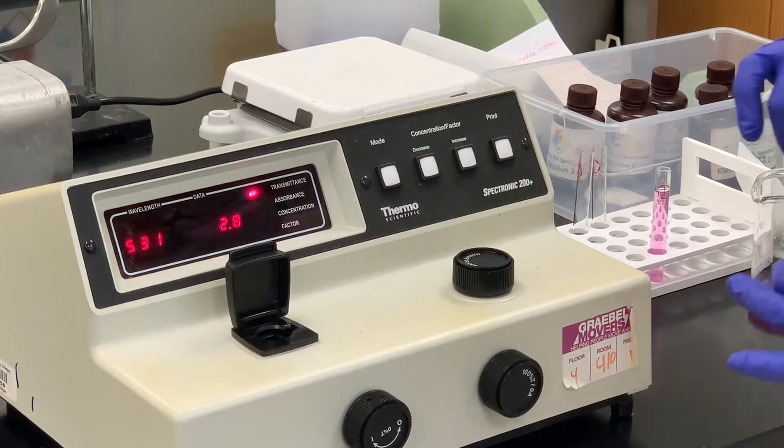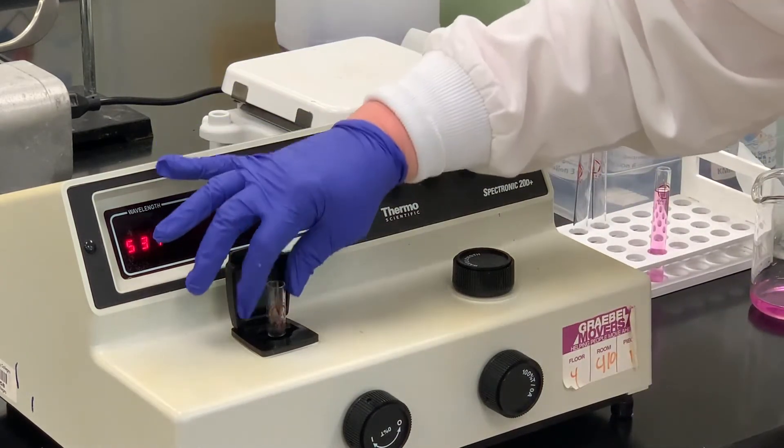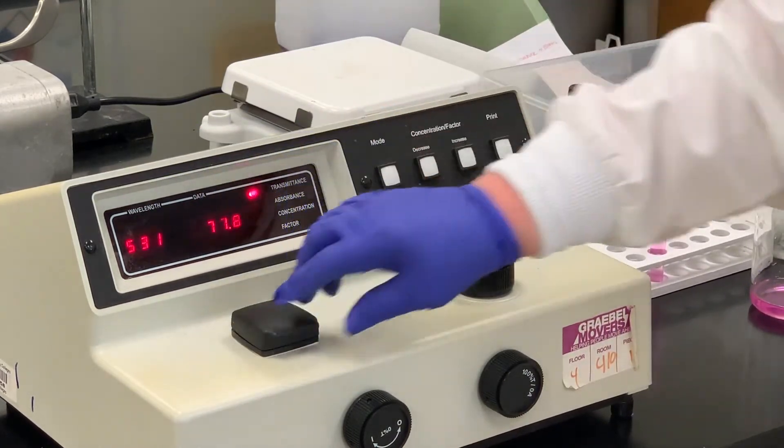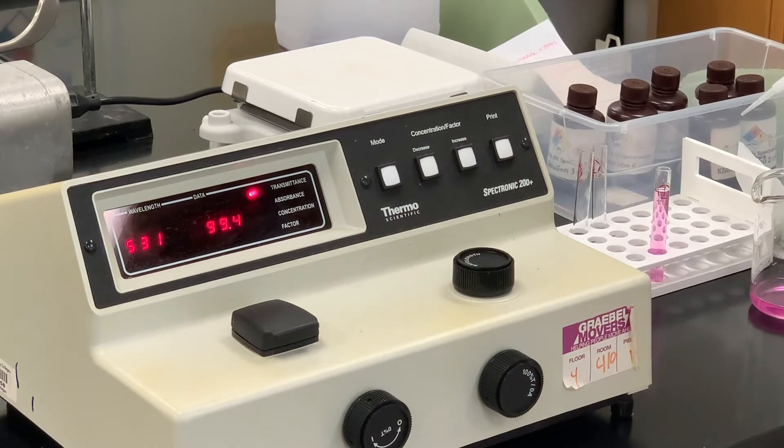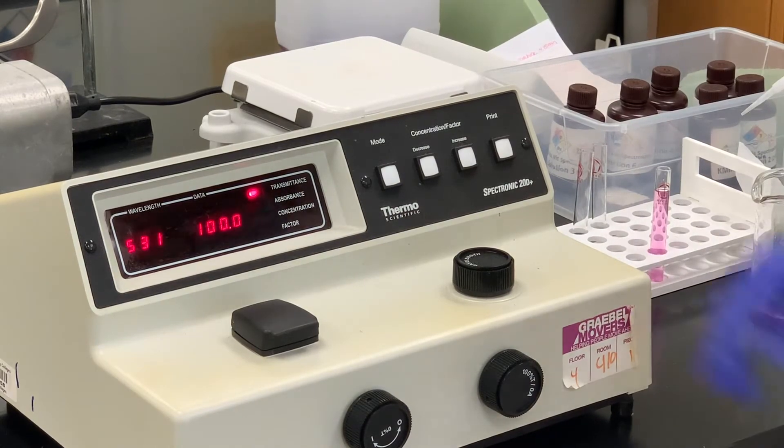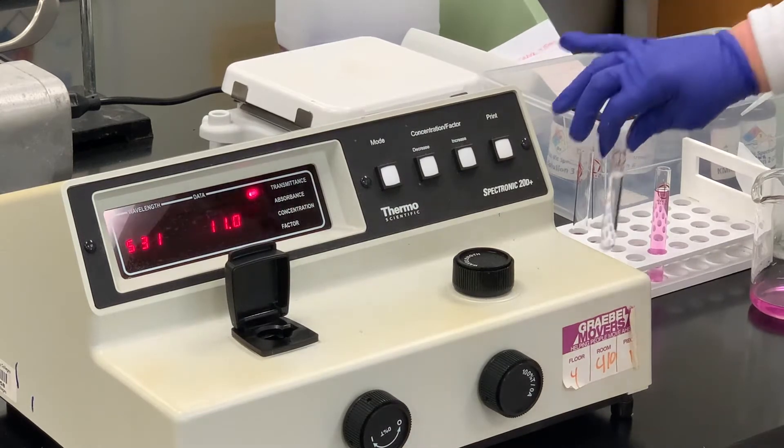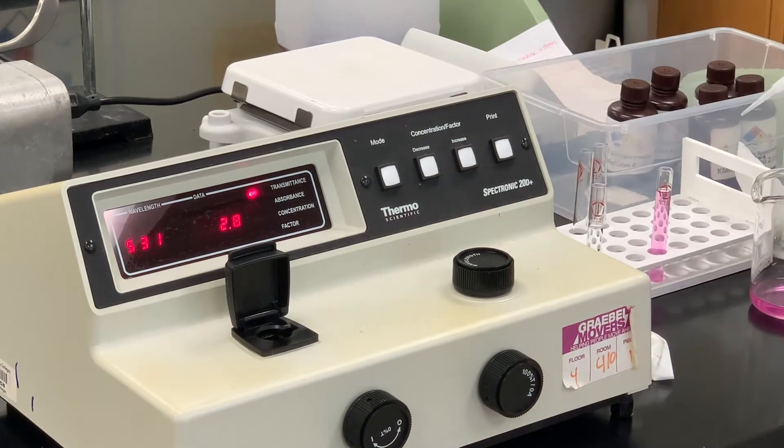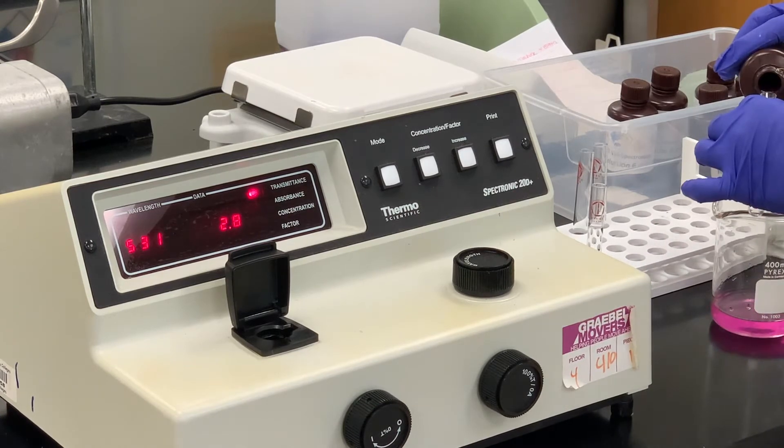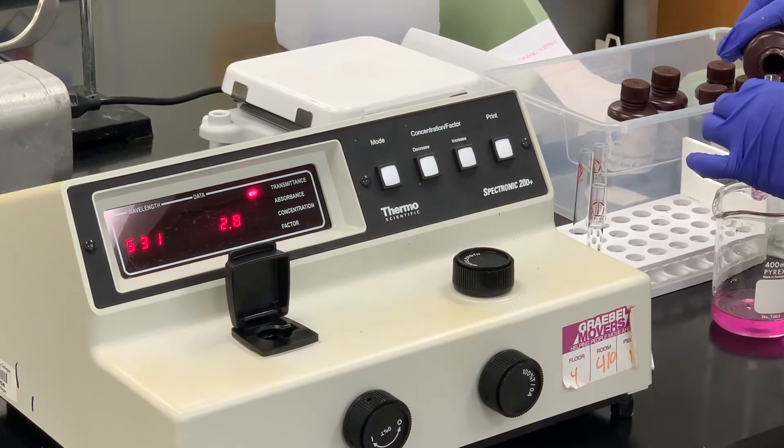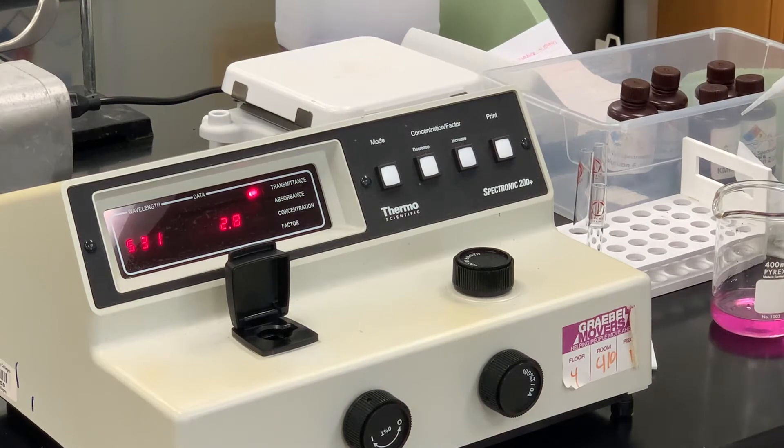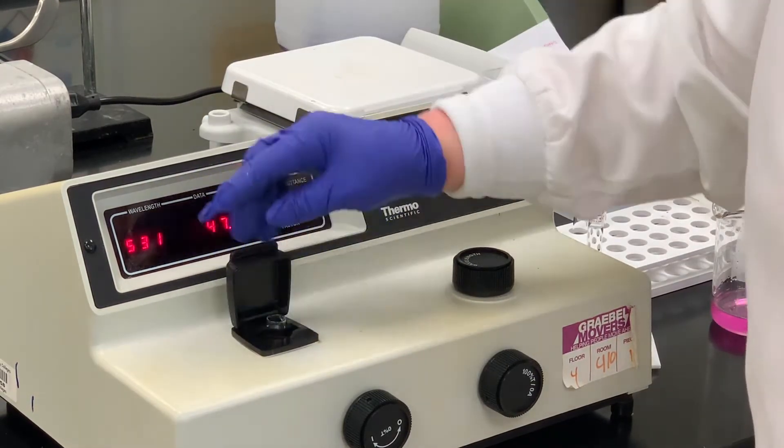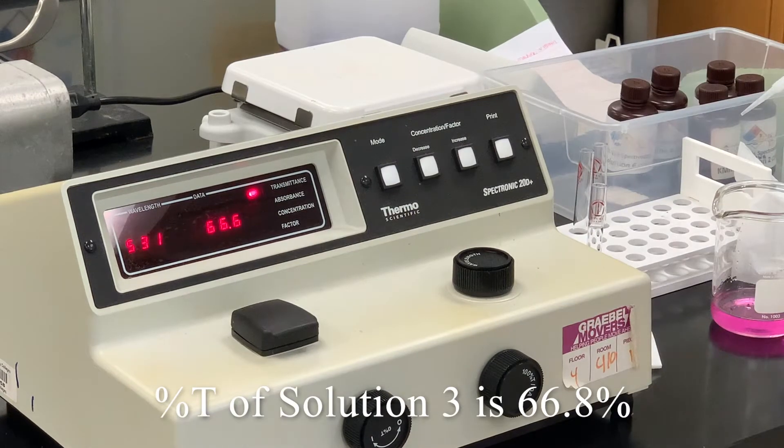Again, I'm just going to go back and make sure we're still at a hundred percent. There should not be much variation there. And now I'm going to use solution three, emptying solution two into a beaker and then rinsing that cuvette three times with the contents for solution three. And solution three is 66.8.